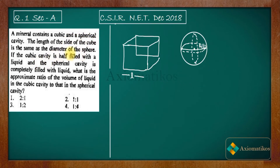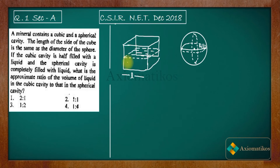The question tells us that the cubic cavity is half-filled with liquid, so only half of the cubic cavity is filled. The spherical cavity is completely filled with liquid. We need to find the approximate ratio of the volume of liquid in the cubic cavity to that in the spherical cavity.